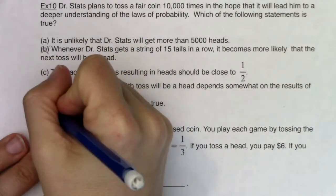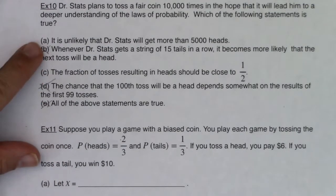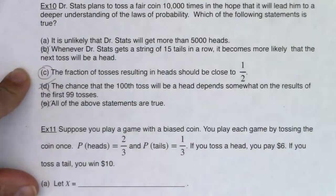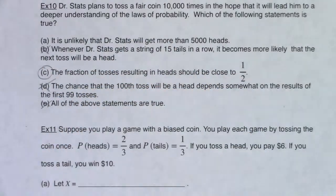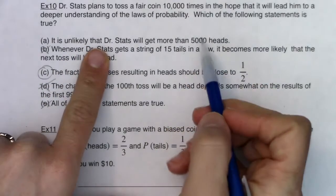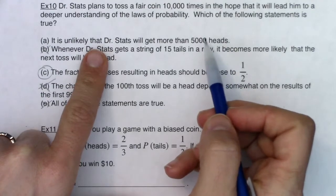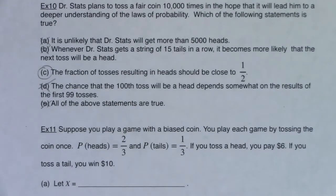As soon as you realize two are false then there's no way that E will be the answer. So we have to see what is more true. Is it unlikely that doctor stats will get more than 5,000 heads or does the fraction of tosses resulting in heads become close to one-half? And this is exactly what the law of large numbers is saying. That the relative frequency of your experiment will get closer and closer to the probability of the experiment. In this case we're tossing a fair coin. This is false. It's actually very likely that doctor stats will get more than 5,000 heads. It's very possible it gets 5,001, 5,002. It just depends. So I won't say it's unlikely at all. So there's a multiple choice question when we're looking at the law of large numbers.